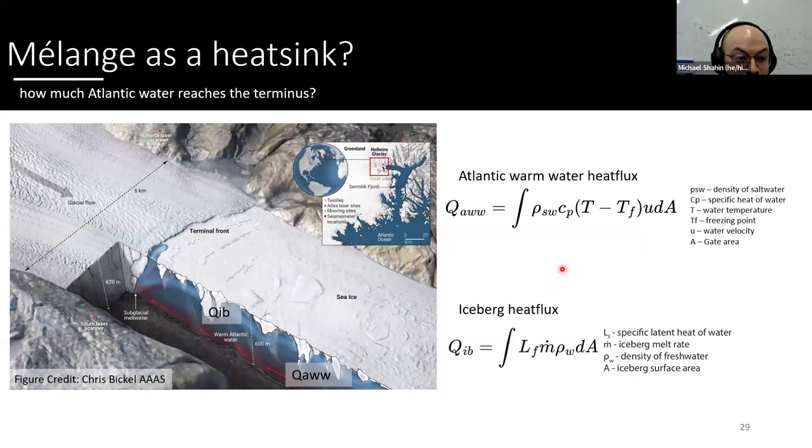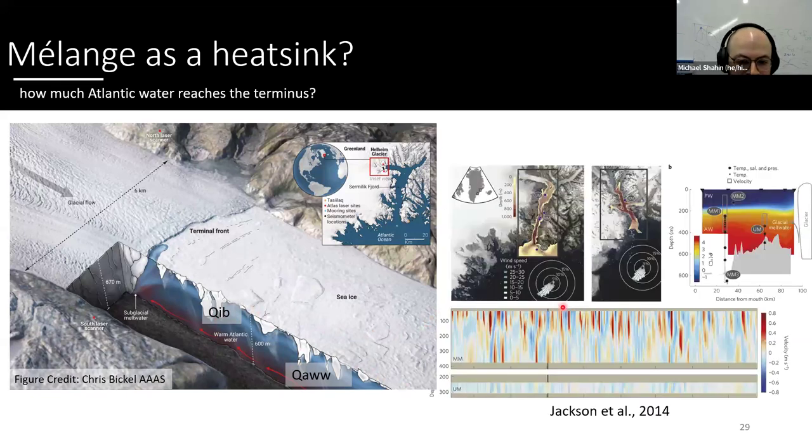So to test this hypothesis of melange as a heat sink, really how much Atlantic water reaches the terminus, we have to parameterize our variables. So in the schematic, again, we see the warm Atlantic waters at the bottom, and it's warm at the bottom, because it's salty and dense than the fresh polar water at the top. And we just integrate over a specific gate, the amount of heat coming in flow to the fjord. And then also the iceberg heat flux, which is just integration of the melt rate over an iceberg. And these are just in units of watts, sort of like joules over time. And this schematic, I want to be real with y'all, right, this is a beautiful schematic. But in reality, it's not like I-35 of heat just hitting the terminus, right?